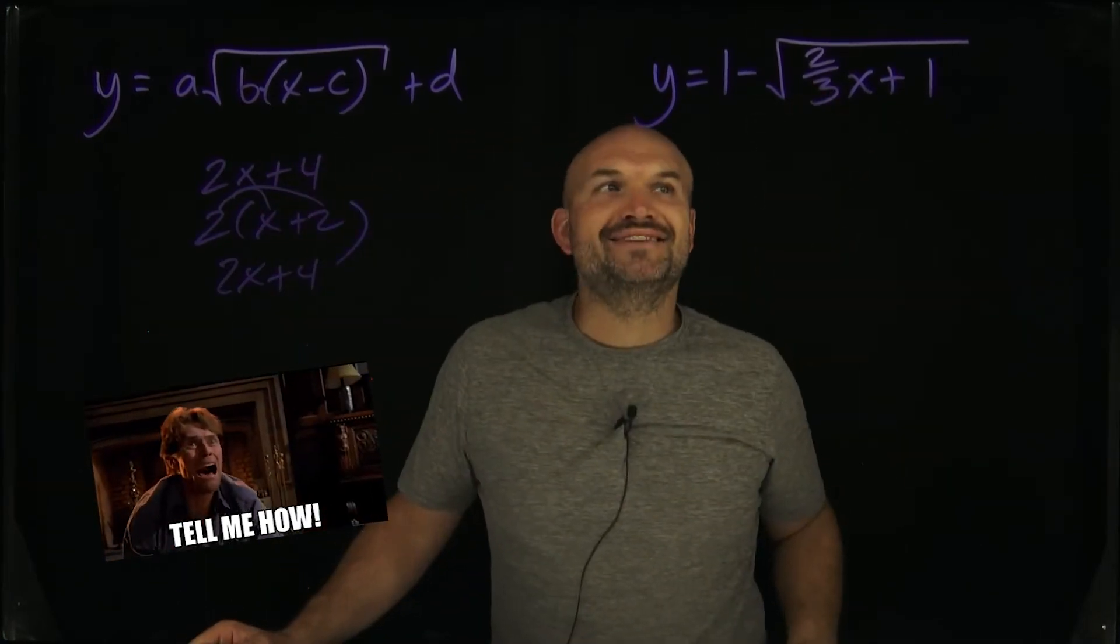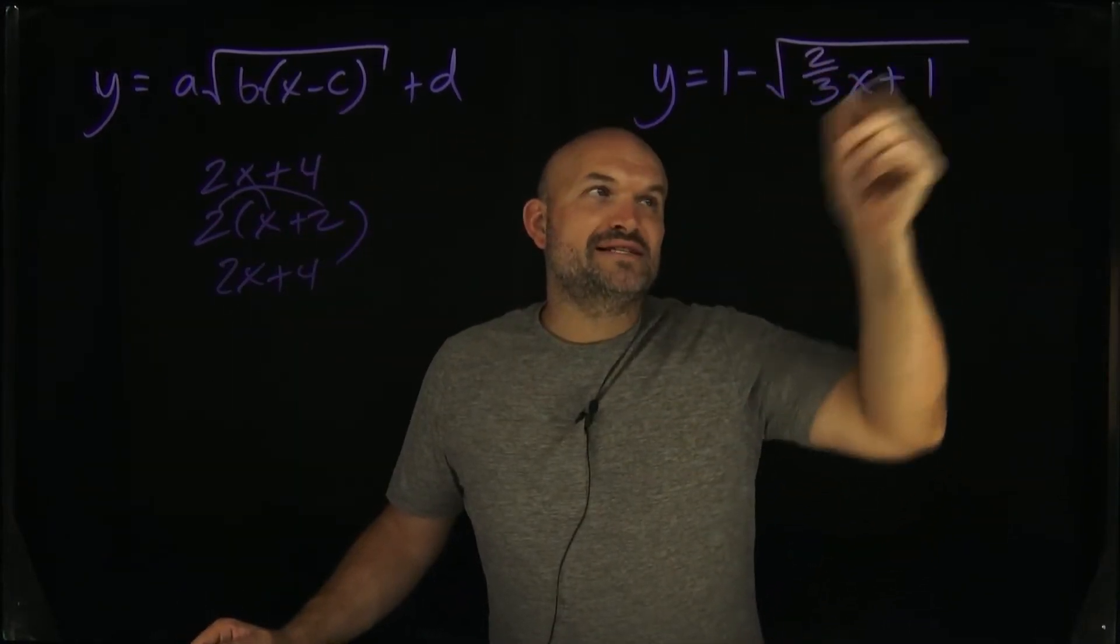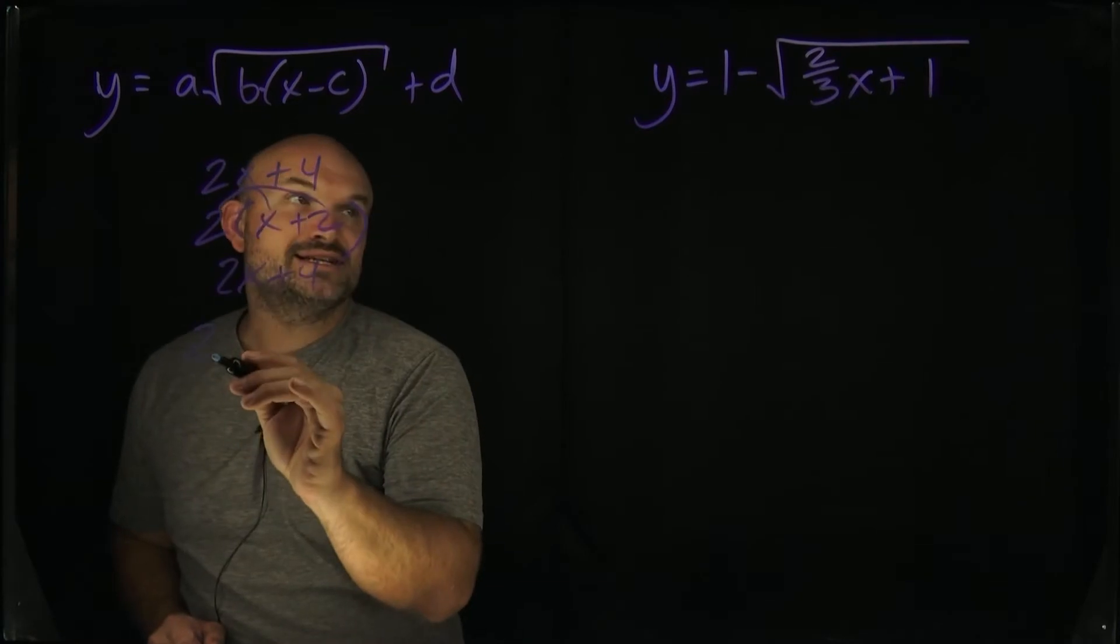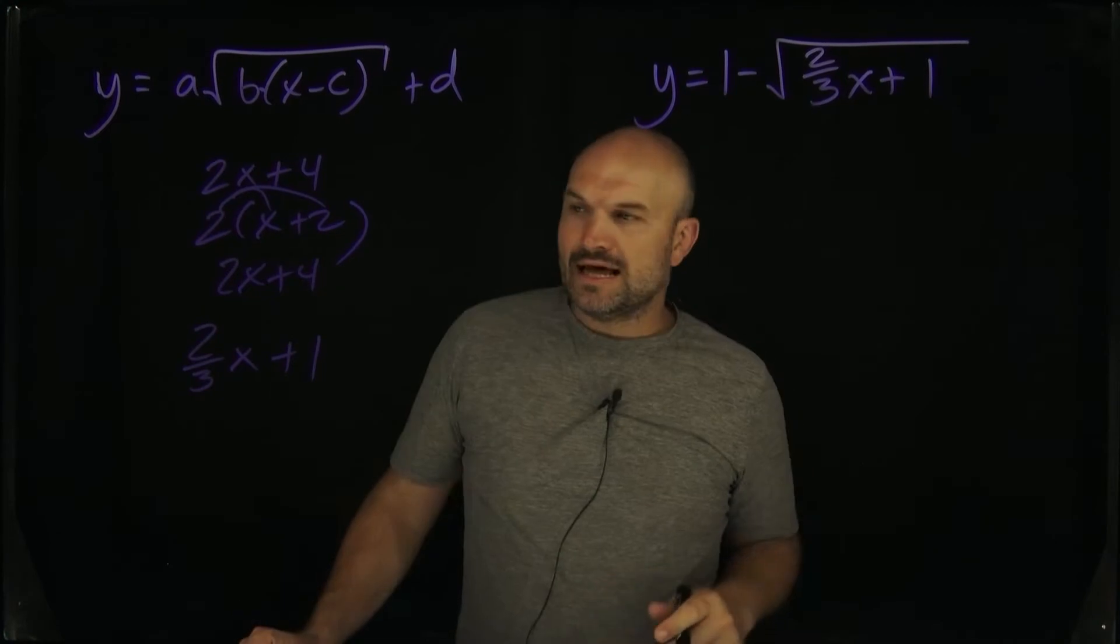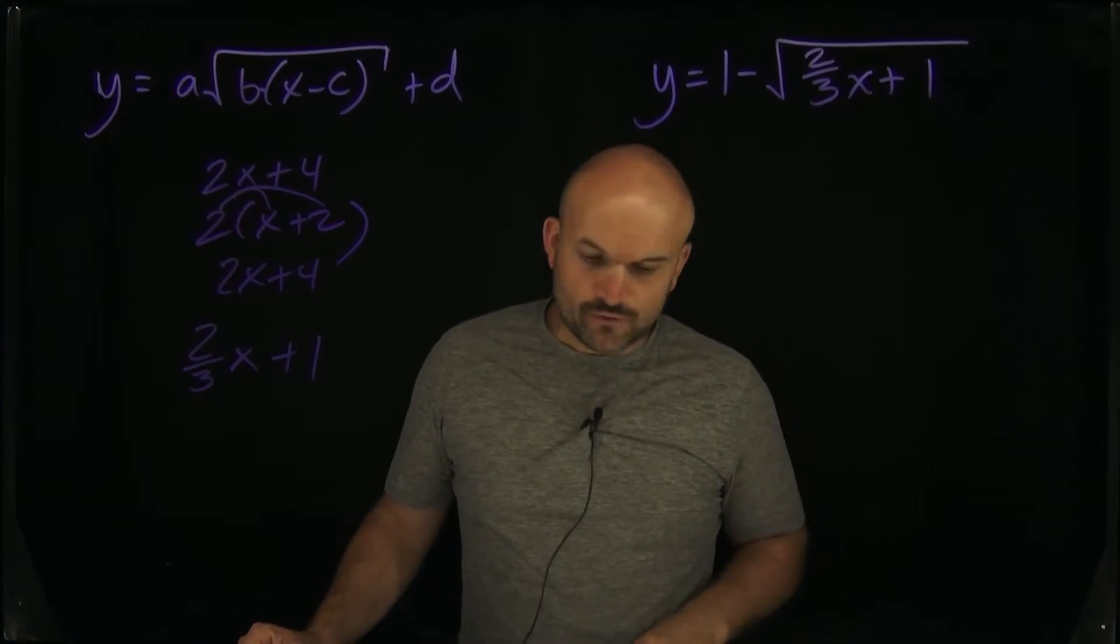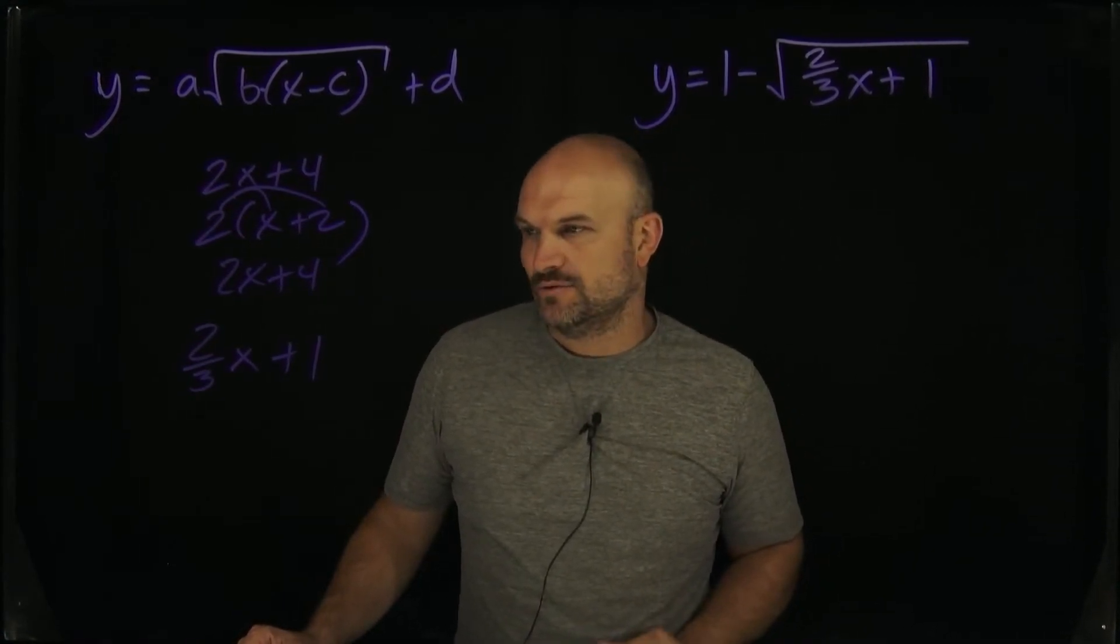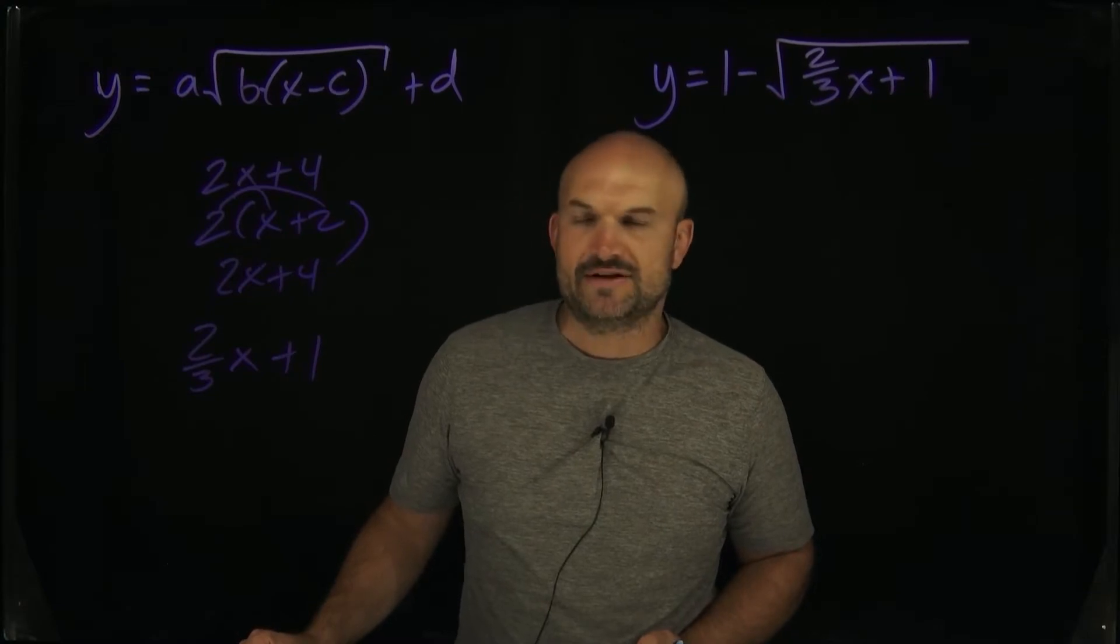How the heck do you factor out a two-thirds? Because I don't know what two-thirds basically goes into there. Let's take a look at a different way that we can do this. So I have two-thirds x plus one. How can I factor out the two-thirds? Well, a lot of times when you're thinking about factoring, it can be overwhelming because you're like, I don't know what they have in common. Like what does a two-thirds and a one have in common that I can factor out?